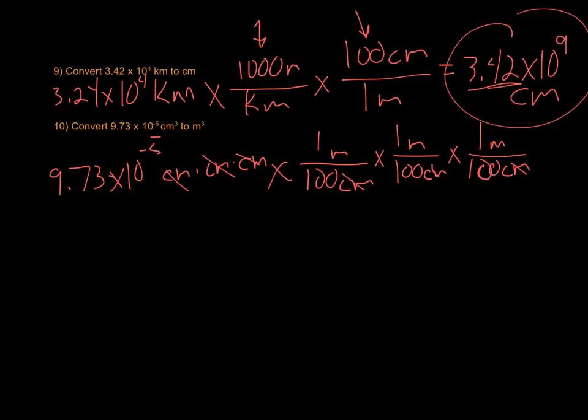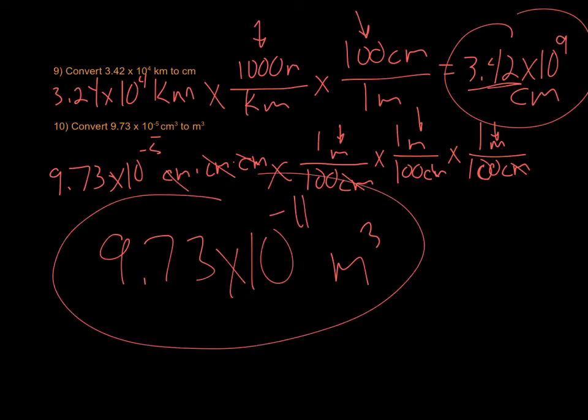Now I can cancel out centimeters three times. I multiply across the top, which gives me meters times meters times meters, which gives me meters cubed. This time I'm dividing by a power of 10. I'm really just moving the decimal point around. And what we end up with is 9.73 times 10 to the negative 11th cubic meters.